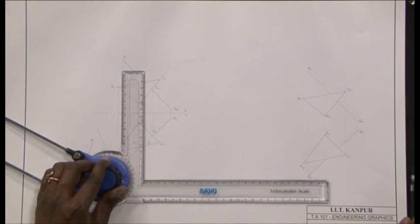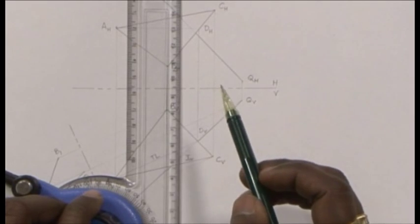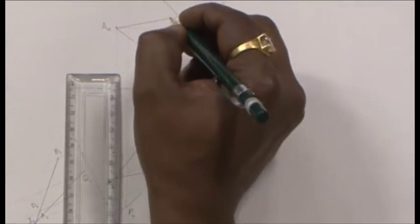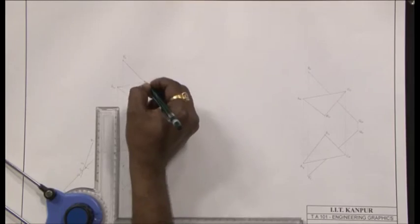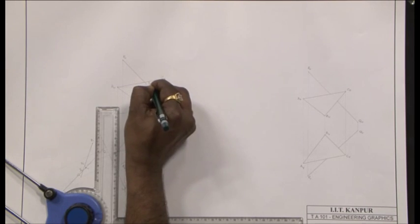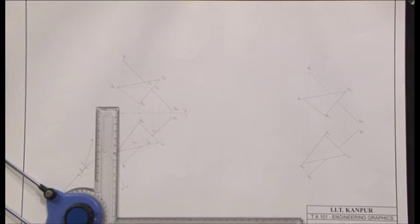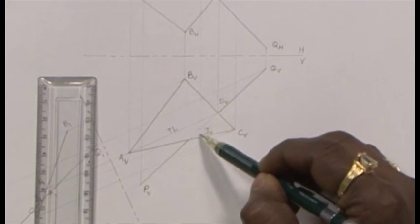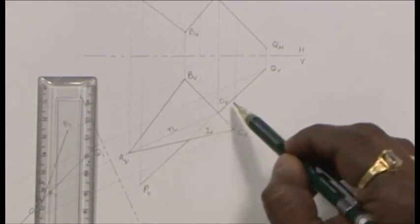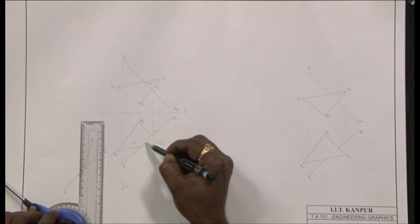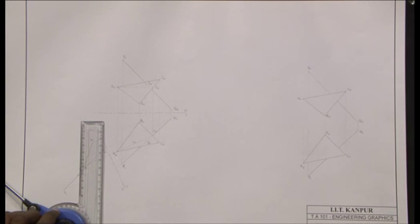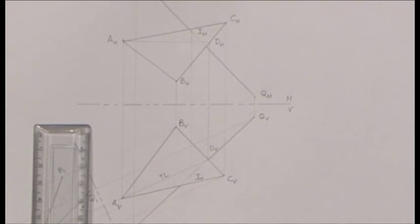I project this intersection point up right there. Now this intersection point has to lie on P H Q H — I call this I H. Notice that not only does this intersection point lie on the line P Q, but the intersection point is also lying within the corresponding projections of the plane, implying that there is an intersection between the plane and the line.